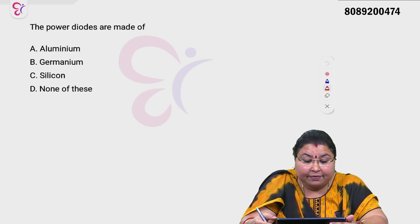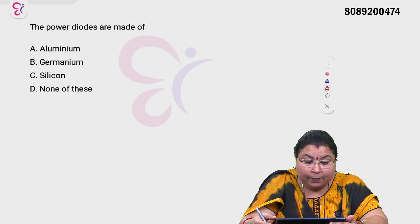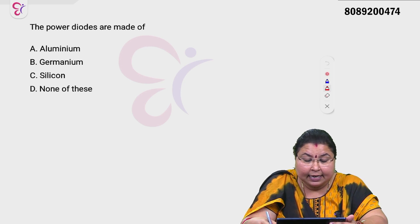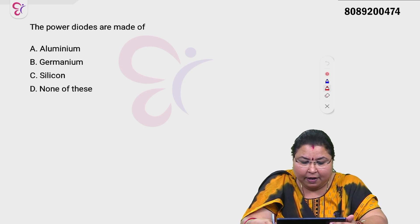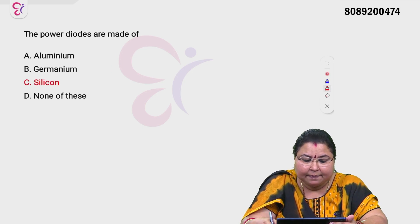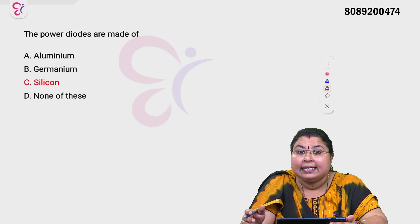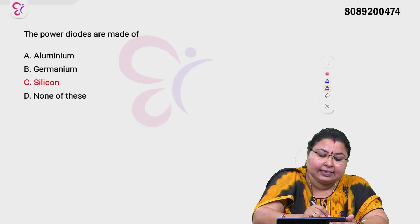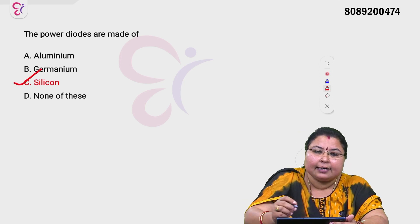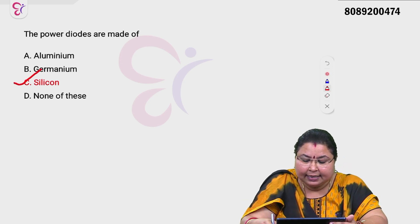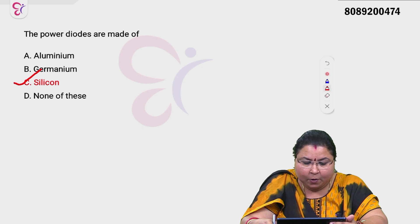Power diodes are made of: Option A aluminum, Option B germanium, Option C silicon, Option D none of these. Power diodes are made of silicon — Option C is the correct answer.